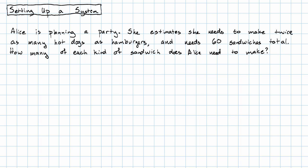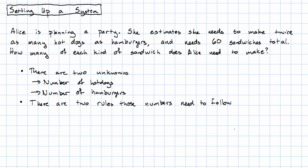How can we tell that this is a job for a system? Well, there are two unknowns: the number of hot dogs and the number of hamburgers. And there are two rules that those numbers need to follow. Twice as many hot dogs as hamburgers, and 60 total.